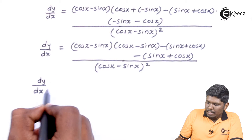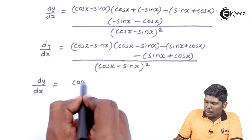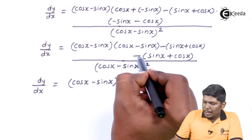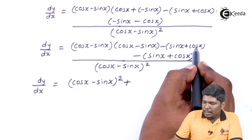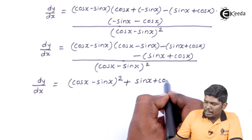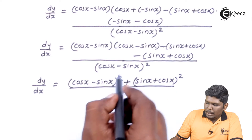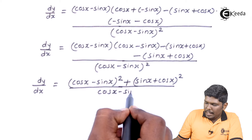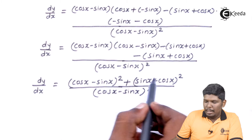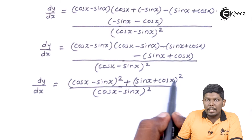dy by dx: we have cos x minus sin x into cos x minus sin x, that is cos x minus sin x the whole square. Minus into minus gives plus, and sin x plus cos x into sin x plus cos x gives sin x plus cos x the whole square. Let us simplify the numerator using the formula a minus b the whole square and a plus b the whole square.